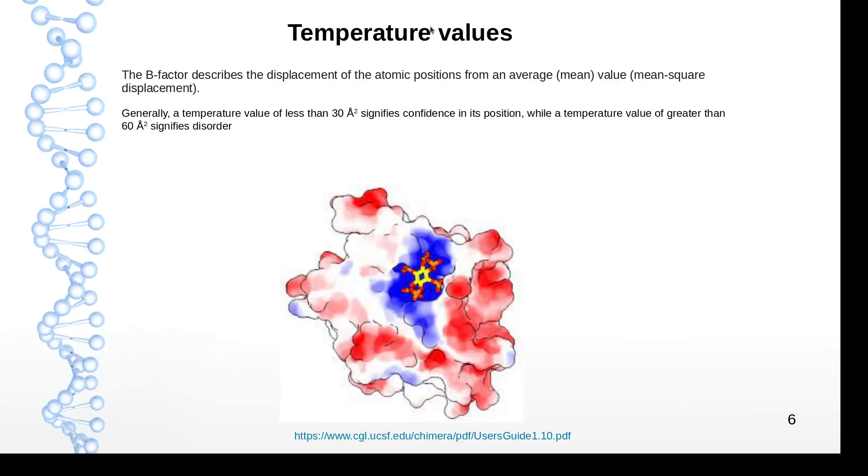And last thing, the temperature is a reflection of the flexibility of the protein or the static image of the protein. So high beta factor, high temperature factor means high flexible parts, but low ones here will be more rigid or less flexible.